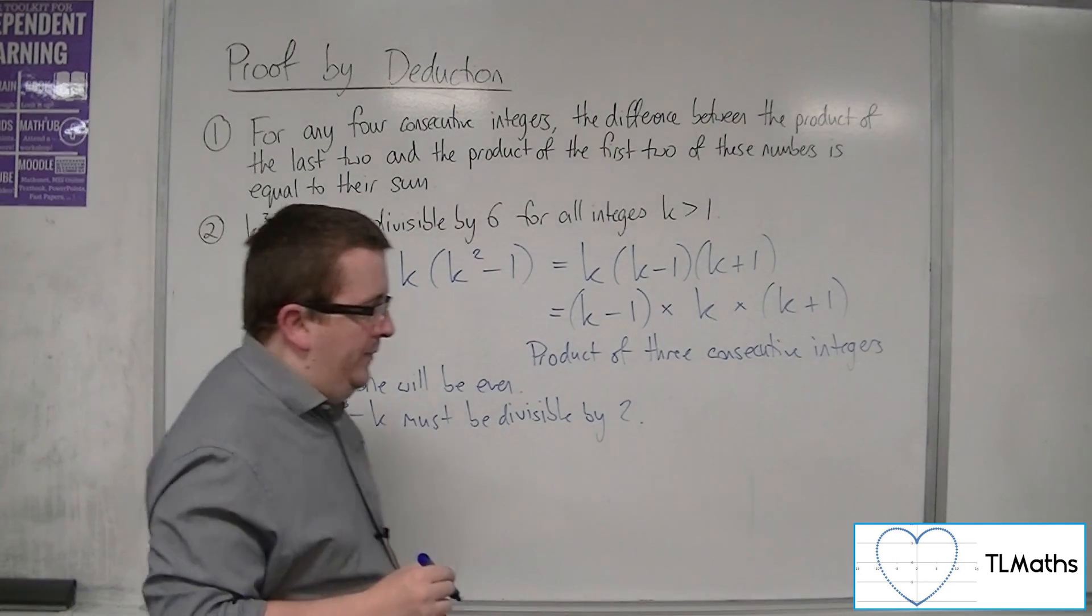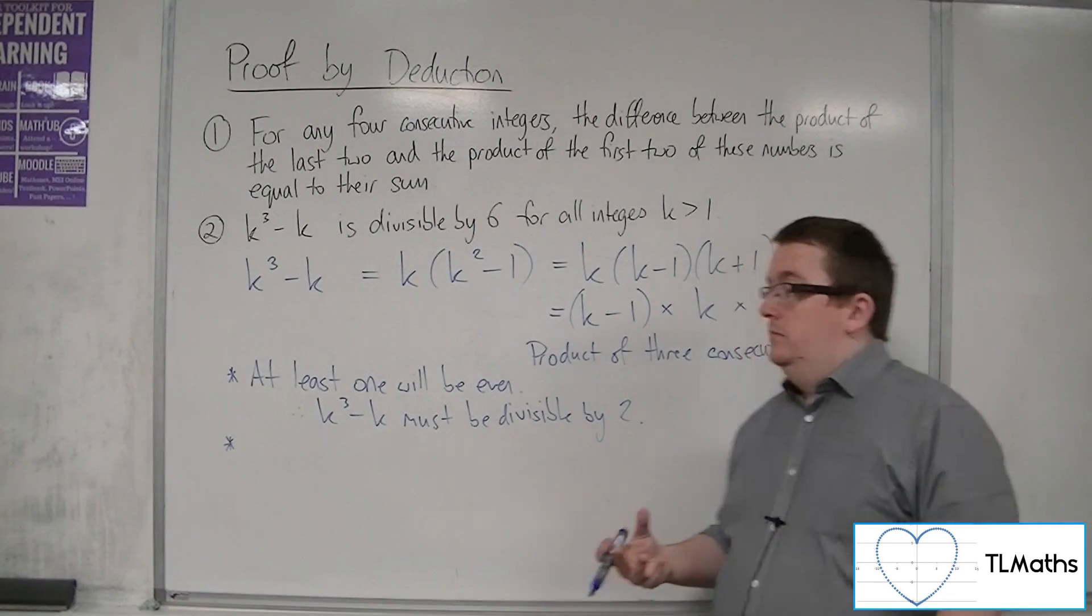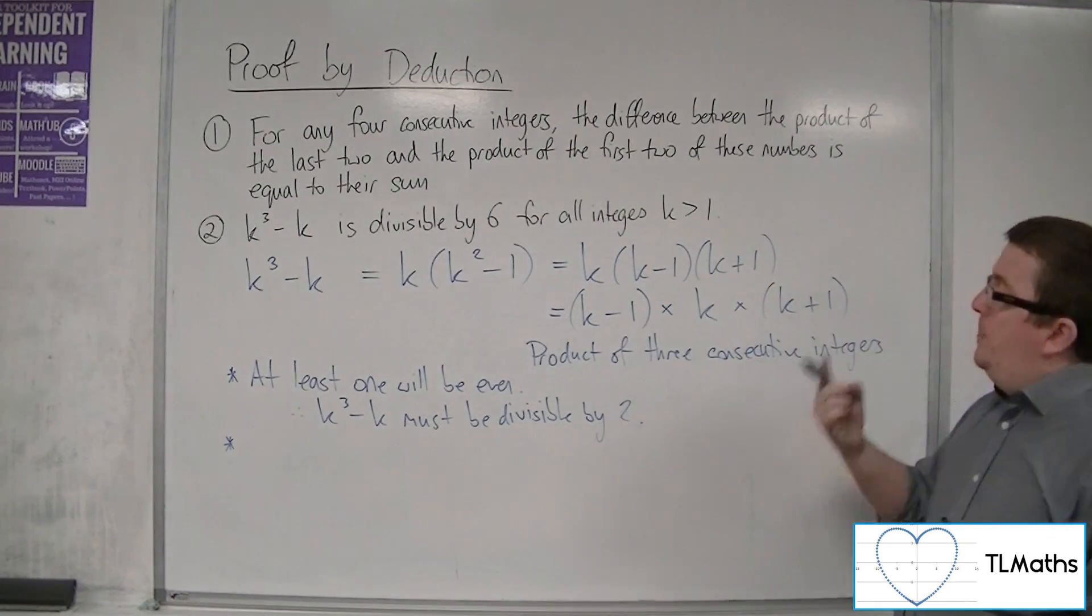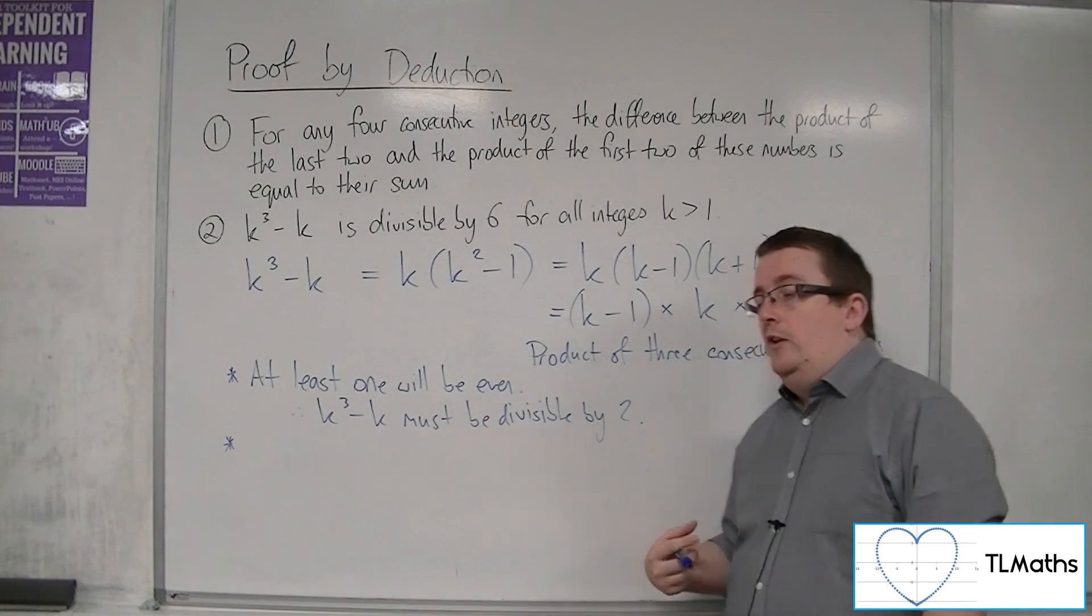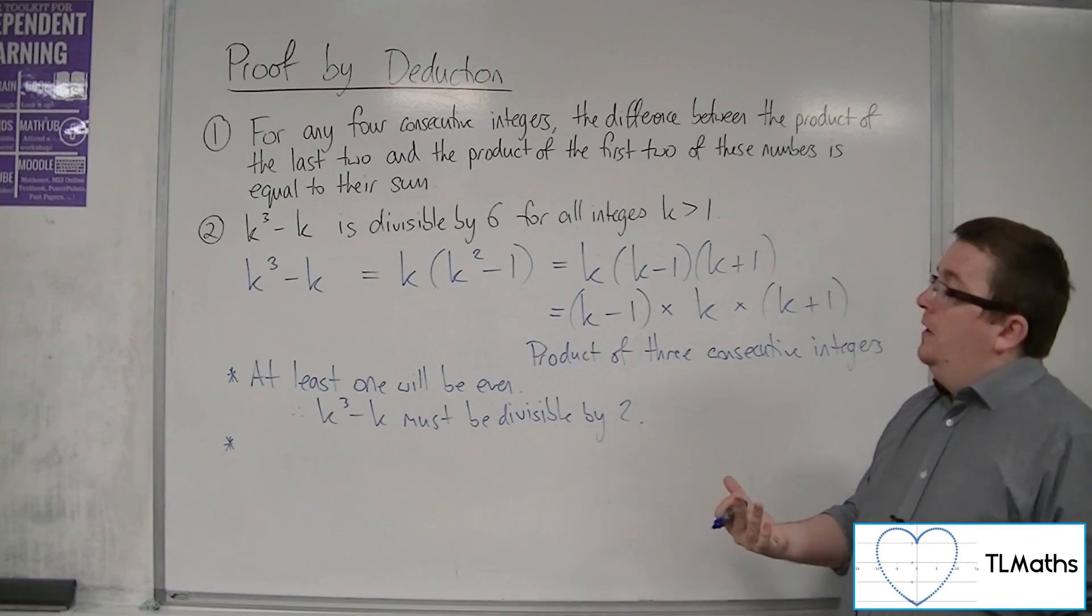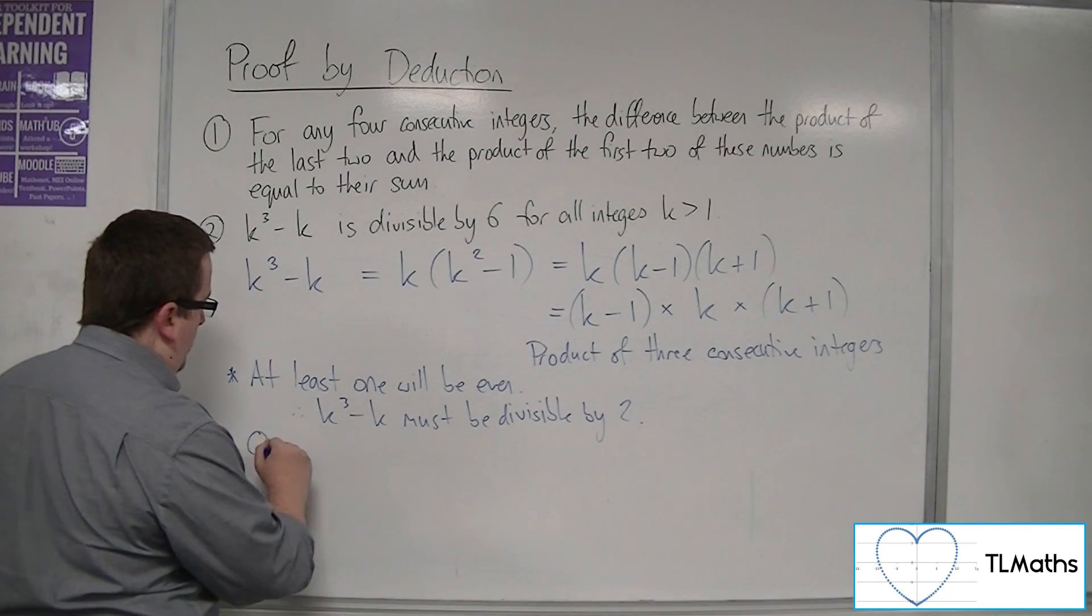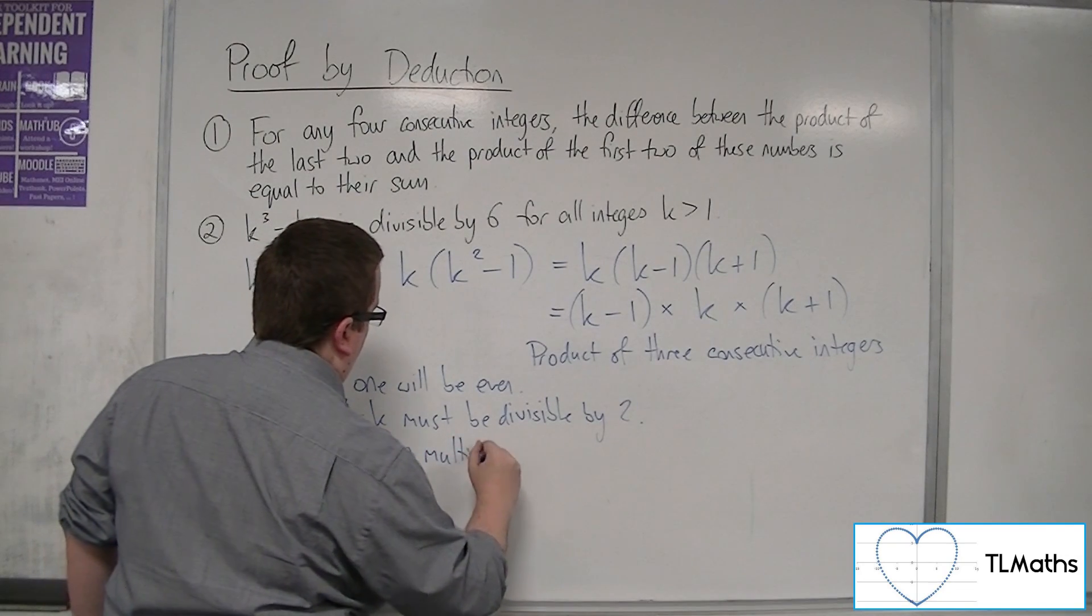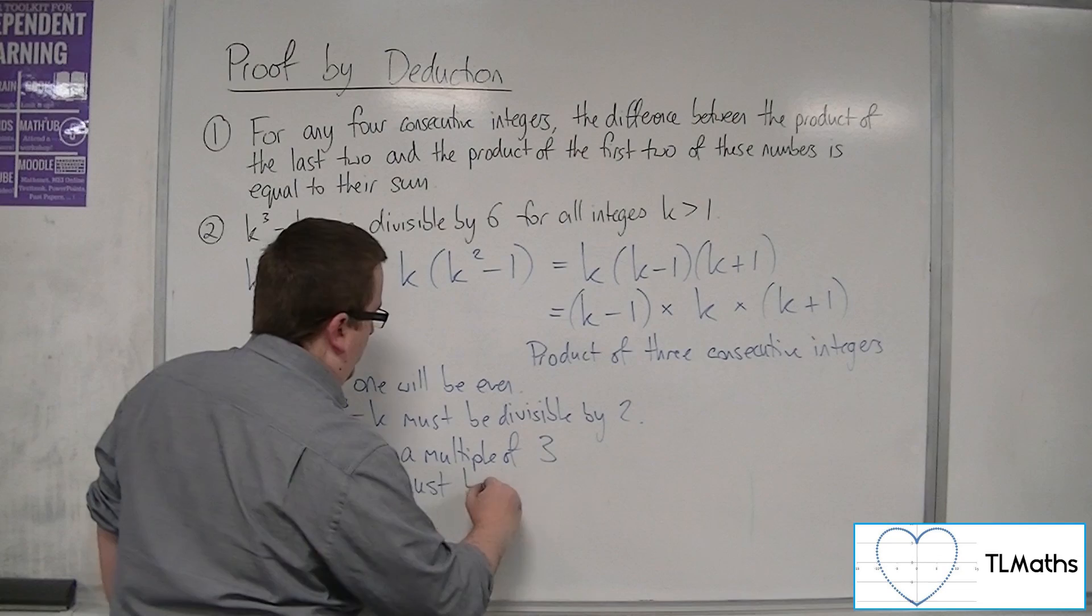Now, with that in place, because we've got three consecutive integers, at least one of them, well, at least one is probably really the wrong wording here, precisely one of them will be a multiple of 3. Because the 3 times table goes up in 3s. So if I'm going up in 3 number slots, 1, 2, 3, 2, 3, 4, 3, 4, 5, I will always hit a number that is in the 3 times table. So one must be a multiple of 3. So that means that k cubed minus k must be divisible by 3.